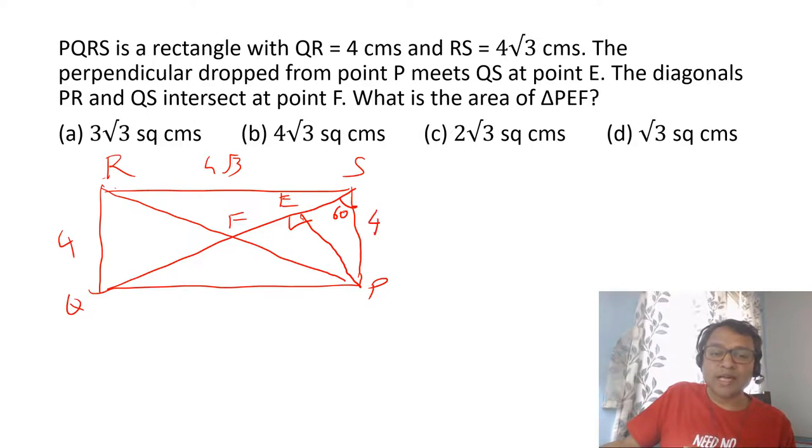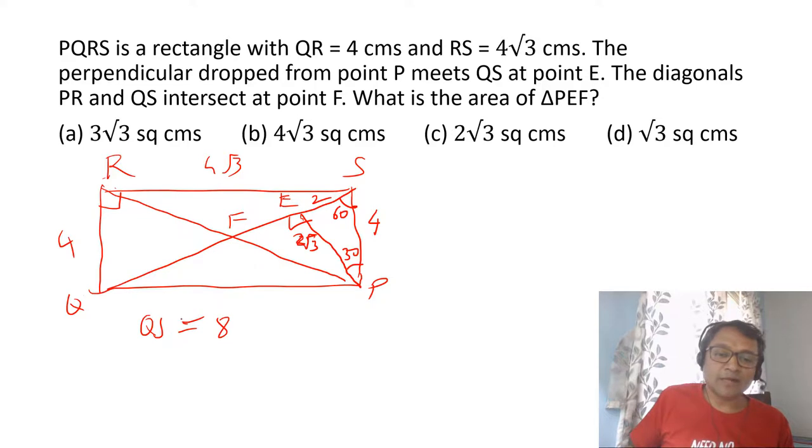So this is 4, side opposite 90 is 4, side opposite 60 will be 2 root 3, and side opposite 30 will be 2. Also, if you look at the big triangle QRS, if side opposite 30 is 4, side opposite 90 will become 8. So this whole QS diagonal will be 8. So automatically FS is half of it, which will be 4. So FE will be 4 minus 2, which is 2.